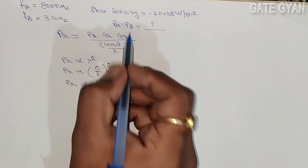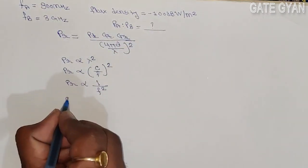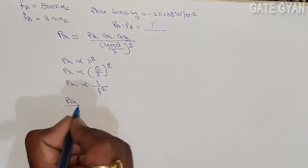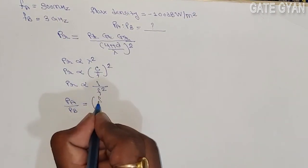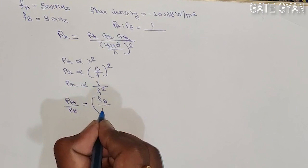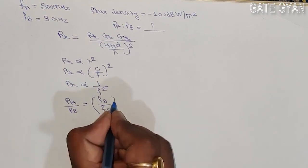So we have to find Pa and Pb. What I can write is Pa divided by Pb is fb divided by fa whole square.